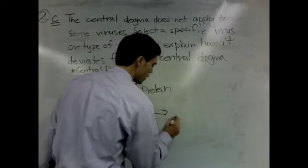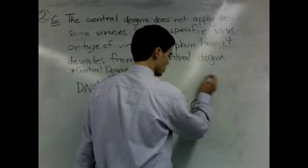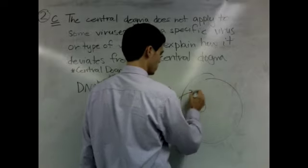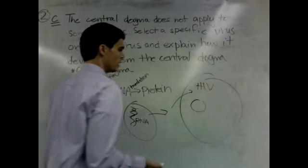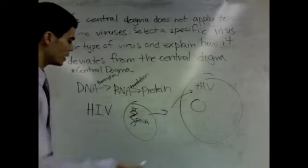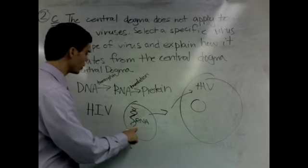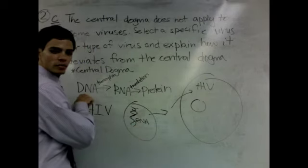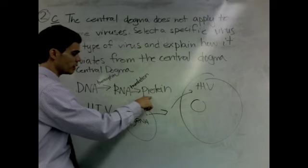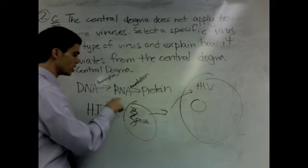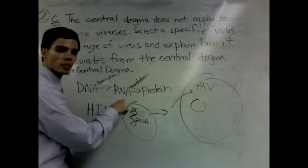And this goes into a cell and because the genome is made of RNA, you can't follow the central dogma of biology because the genetic information is not in the form of DNA, it's in the form of RNA.